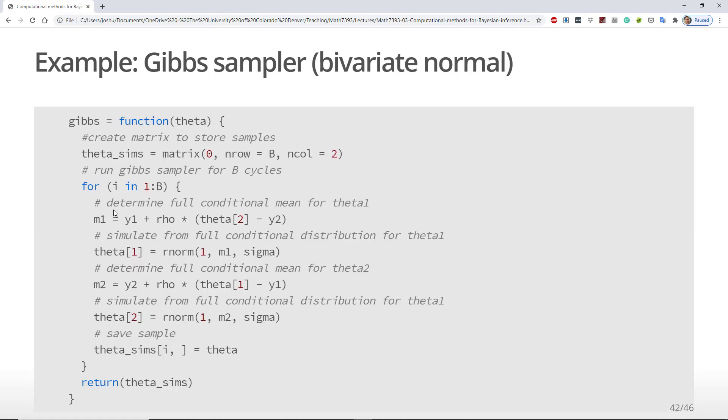Next, I'm going to create a function to do the Gibbs sampling. You don't have to do this, but it makes it easier to run multiple chains with different starting values, which is something you will want to do in general to check convergence. The only argument of this function is theta. This is actually bad programming practice because there are many other variables the function depends on, such as b, the data, and the standard deviation of the full conditionals. However, the function will be able to see those values as long as we specify them ahead of time. So to make this example simpler, I have left them out of the function. However, I want to emphasize that this is poor coding practice and you should really avoid this.